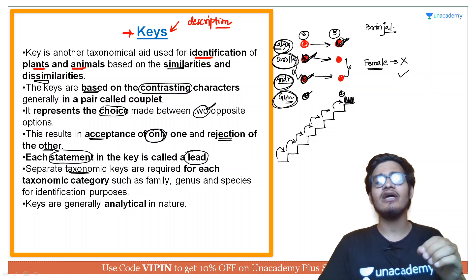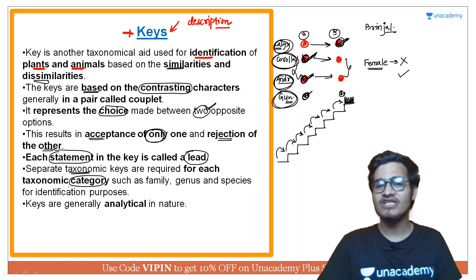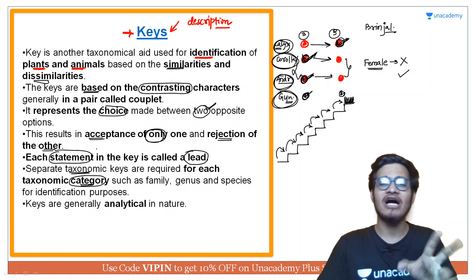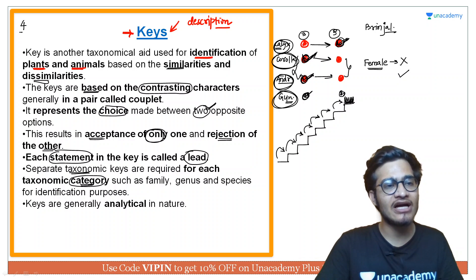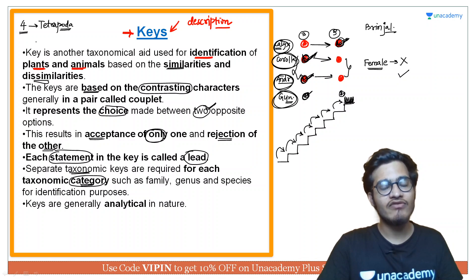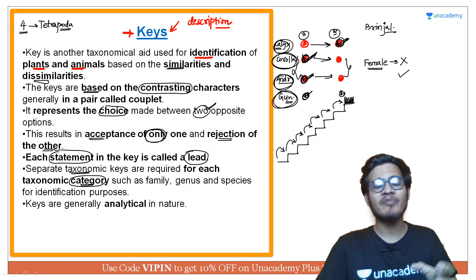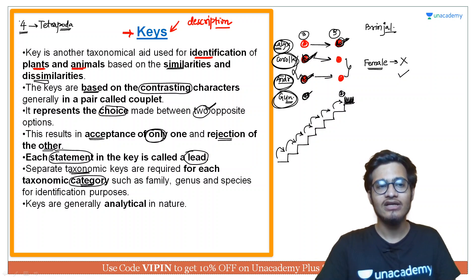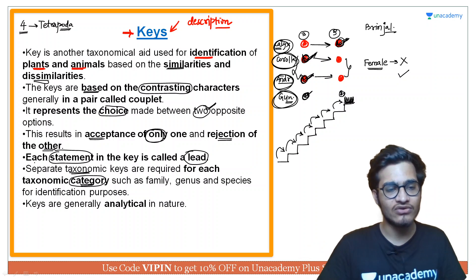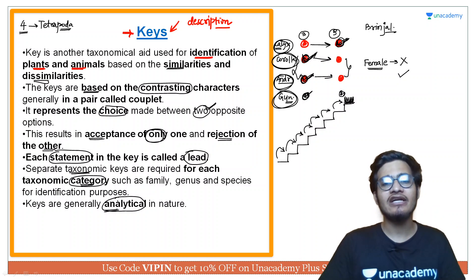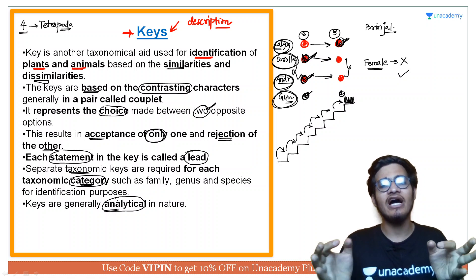Taxonomic keys अलग-अलग होती हैं अलग-अलग categories के लिए — species के लिए अलग key, genus के लिए अलग, family के लिए अलग. यह both plants and animals के लिए है. जैसे animals की key बनाते समय: 4 limbs वाले animals अलग (tetrapoda), shell वाले mollusks अलग, spiny body वाले echinoderms अलग, chitinous exoskeleton वाले arthropods/insects अलग. Characters के basis पर जिस जिस में present है उसे अलग रख दो. So keys analytical in nature होती हैं — कौन-कौन से identification characters किसी species में हैं और कौन-कौन से नहीं हैं.